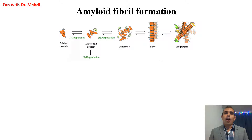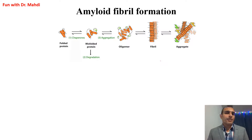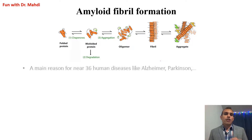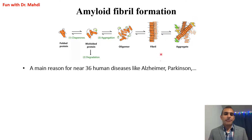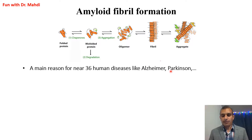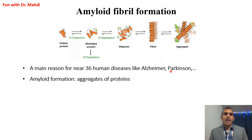Amyloid fiber formation is a very important topic, especially in biology and medicine. Amyloid formation could be the reason for some types of diseases called amyloidoses. Amyloid fiber formation could happen for nearly 36 different types of proteins, meaning it could be responsible for 36 human diseases, like Alzheimer's and Parkinson's.